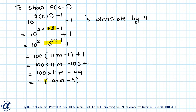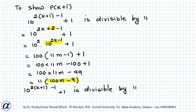When I divide this by 11 I get 100M minus 9. So I can say that 10 to the power 2(k+1) minus 1 plus 1 is divisible by 11, which implies P(k+1) is true, and hence proved.